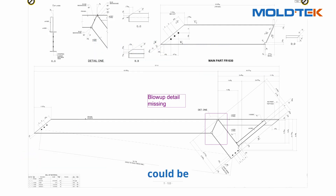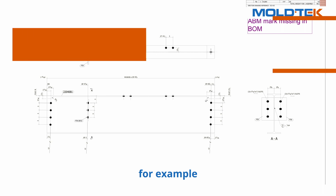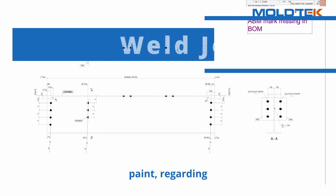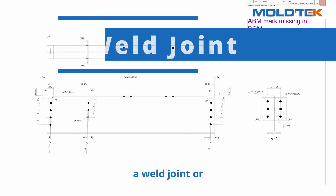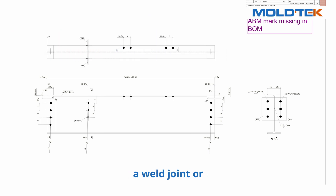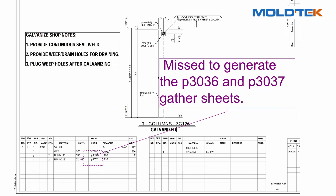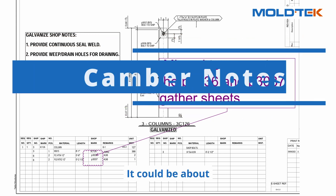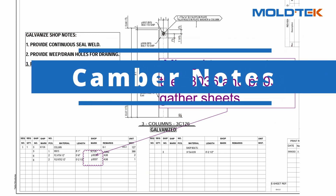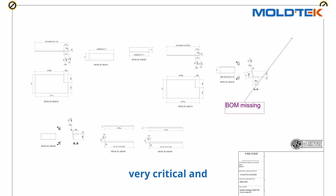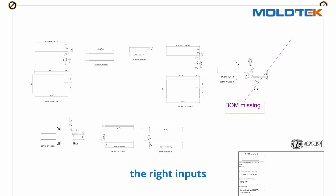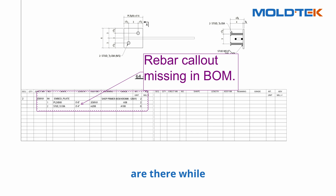The missing information could be something like regarding the paint, regarding a weld joint or the welding specifications, or it could be about the camber notes. All this information is very critical and needs to be mentioned in the drawing to ensure the right inputs are there while fabrication of the steel.